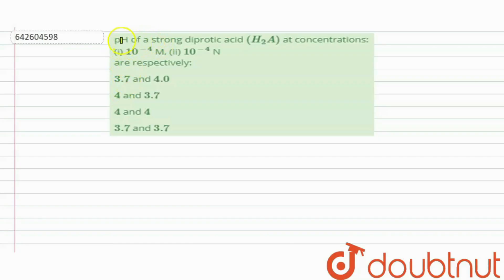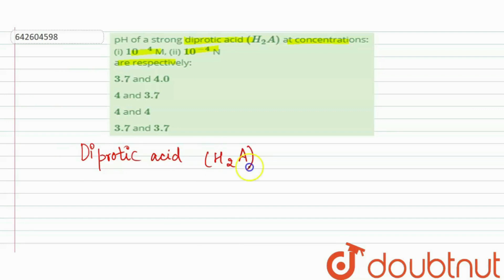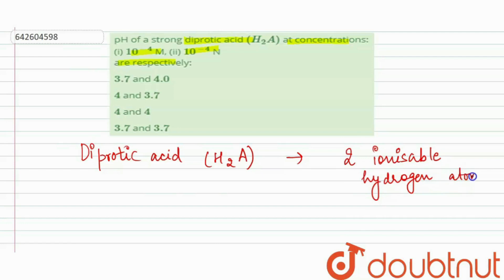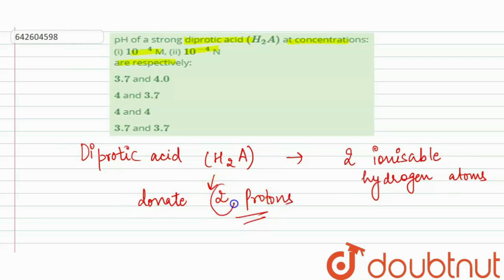Hi everyone, let's take a question. The question says: pH of a strong diprotic acid at concentration 10⁻⁴ molar and 10⁻⁴ normality are respectively. Now we have to find the pH of diprotic acid at these two different concentrations. A diprotic acid is represented as H₂A — it contains two ionizable hydrogen atoms, or it is the acid that donates two protons when dissolved in water.